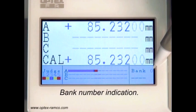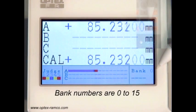Over on the right hand side is the bank number indication. You can set up to 16 different banks in the controller.